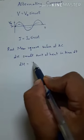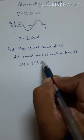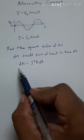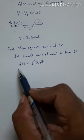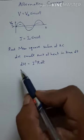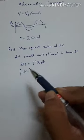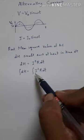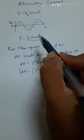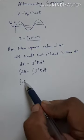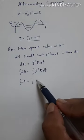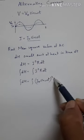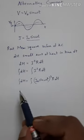As you already know, the formula for heat from Joule's law is dH = I²R dt. Therefore, to find the total heat over one cycle, we integrate: ∫dH = ∫I²R dt. Now I here can be written as I₀ sin(ωt), so the integral becomes ∫(I₀ sin(ωt))² · R dt.